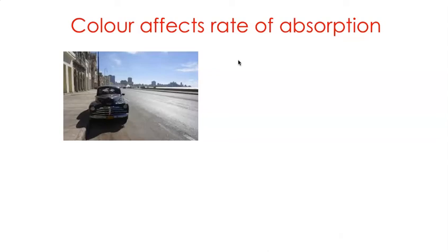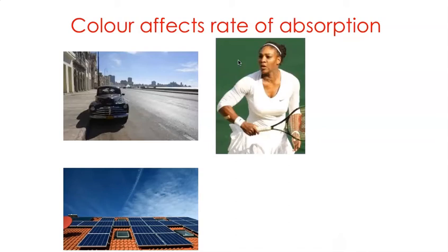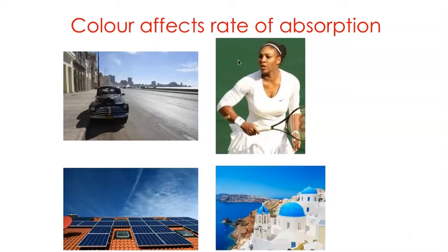A dark car, for example, gets very hot on a sunny day. Solar panels should indeed be black so that they absorb more energy — white would simply reflect it away. That's why tennis and cricket players tend to wear white to keep cool when playing summer sports, and houses in hot countries are often painted white for the same reason.